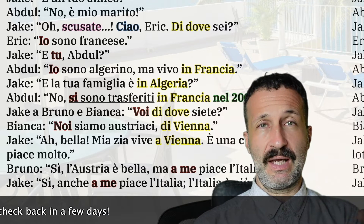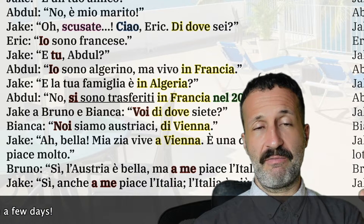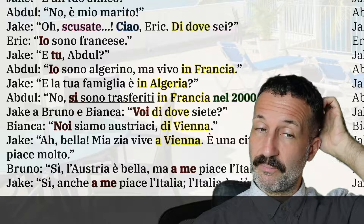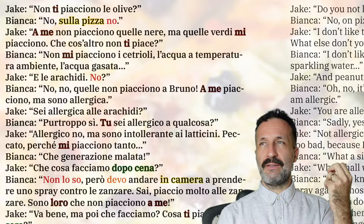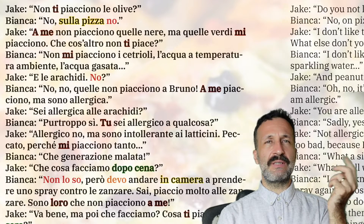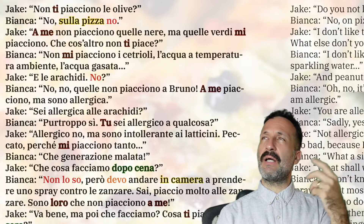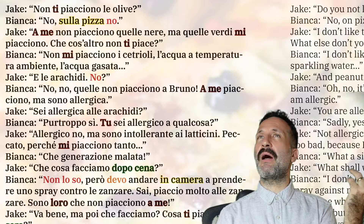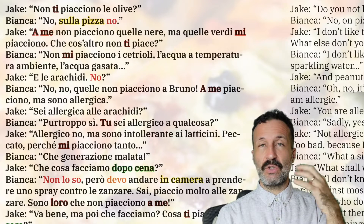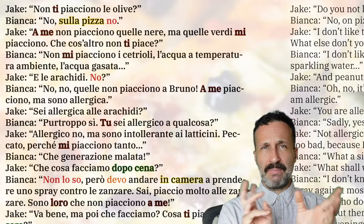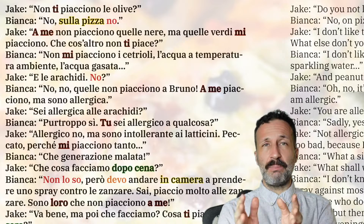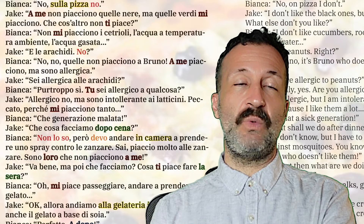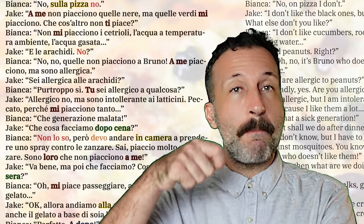He cannot just say it out of the blue — it sounds like he's stating 'I don't like black olives,' like who asked you? So 'me' and 'a me' mean the same grammatically; they all mean 'to me.' We don't say 'I'm brushing my teeth' the same way in Italian.